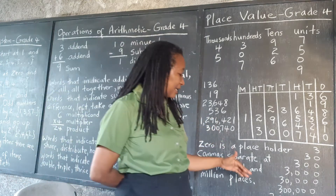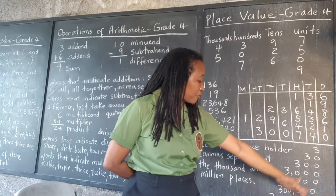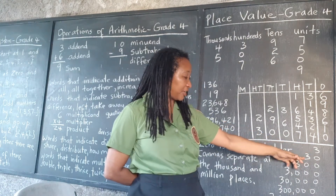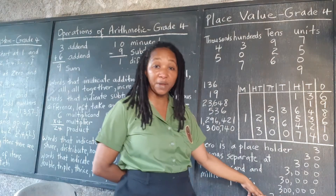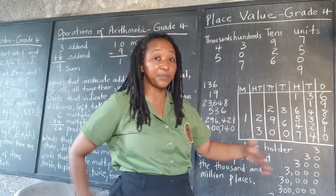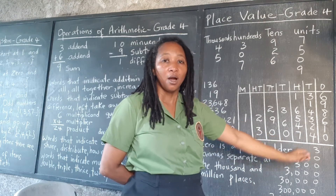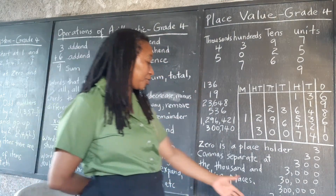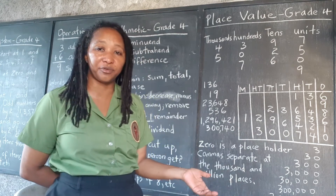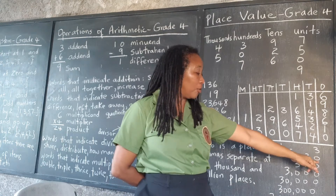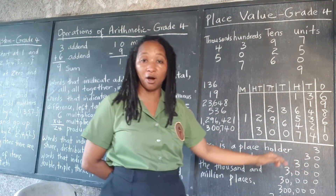In the base-ten place value system, the zero makes all the difference. Look at this: the zeros make the difference between three, thirty, three hundred, three thousand, thirty thousand, three hundred thousand, and three million. They are all different quantities by a vast amount — three million is vastly bigger than three. What is the difference in how we write them? It is simply how many zeros follow the three. If it's just three ones, there are no zeros.